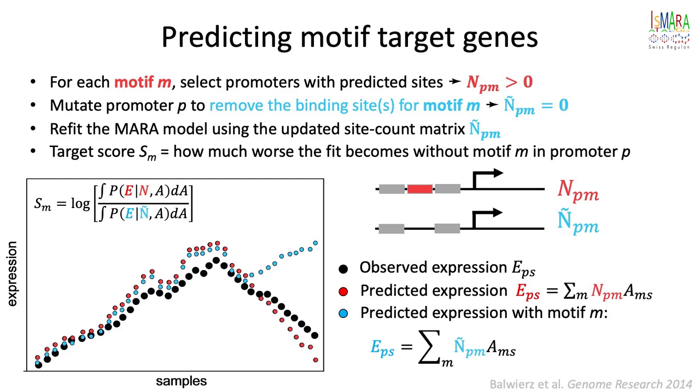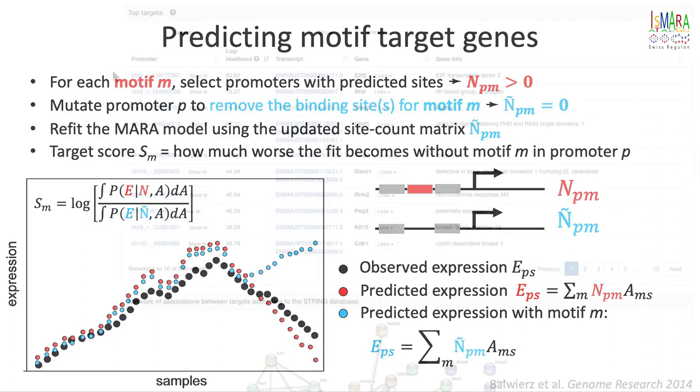The target score for motif M in promoter P quantifies how much better the original predicted red expression profile was compared to the new blue expression profile.